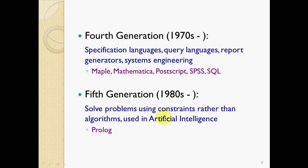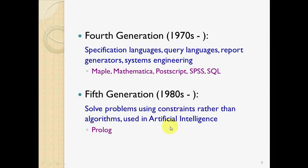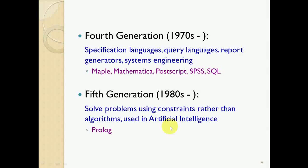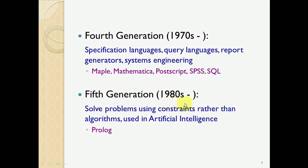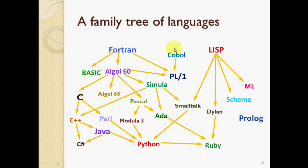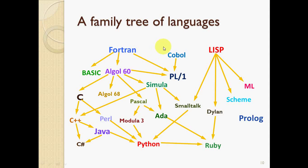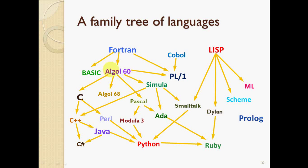The fifth generation emerged in the 1980s. It is very easy to solve problems using constraints rather than algorithms. Fifth generation languages use artificial intelligence and are commonly used in scientific applications. Languages like Prolog are very useful for developing artificial intelligence.